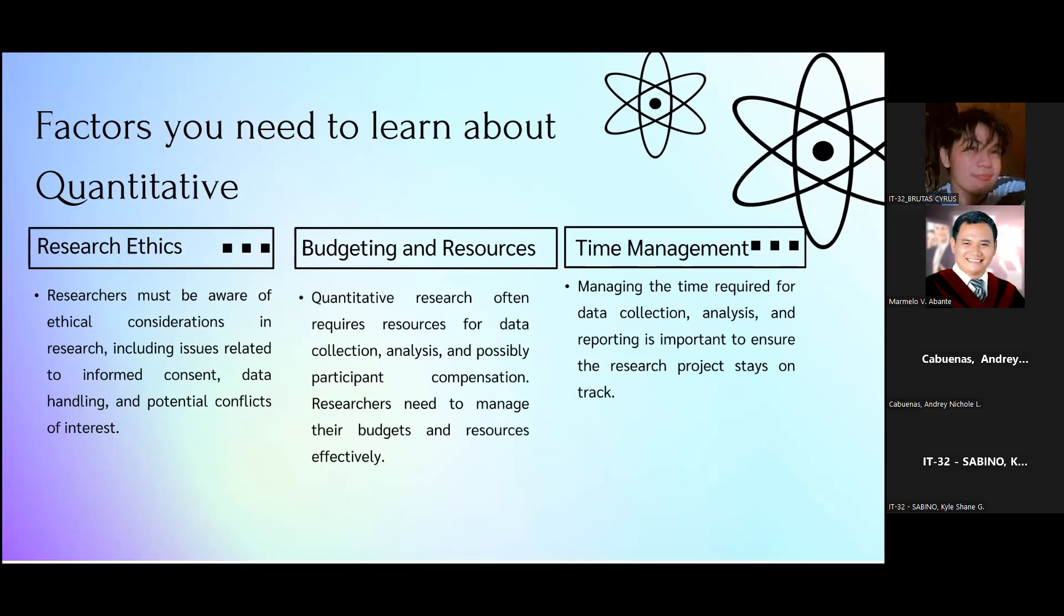In research ethics, researchers must be aware of ethical considerations in research including issues related to informed consent, data handling, and potential conflicts of interest. In budgeting and resources, quantitative research often requires resources for data collection, analysis, and possible participant compensation. Researchers need to manage their budgets and resources effectively. And time management: managing the time required for data collection, analysis, and reporting is important to ensure that the research project stays on track.